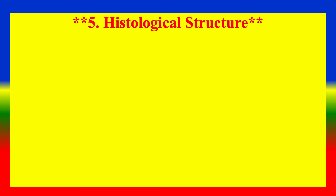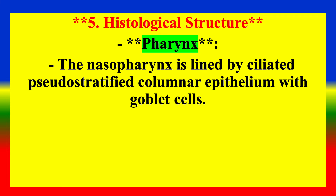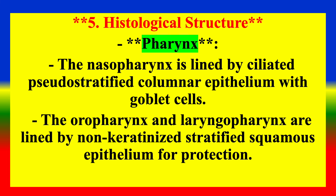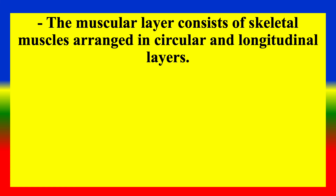Histological Structure — Pharynx: The nasopharynx is lined by ciliated pseudostratified columnar epithelium with goblet cells. The oropharynx and laryngopharynx are lined by non-keratinized stratified squamous epithelium for protection. The muscular layer consists of skeletal muscles arranged in circular and longitudinal layers.